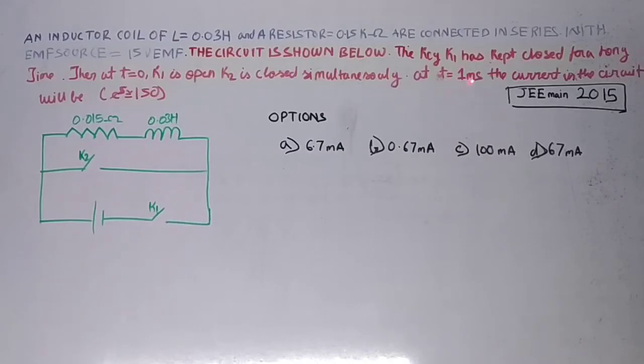We need to find at T equals 1 millisecond, the current in the circuit will be. We need to assume the value of e to the power 5 as 150. The options given are: A) 6.7 mA, B) 0.67 mA, C) 100 mA, and D) 67 mA.